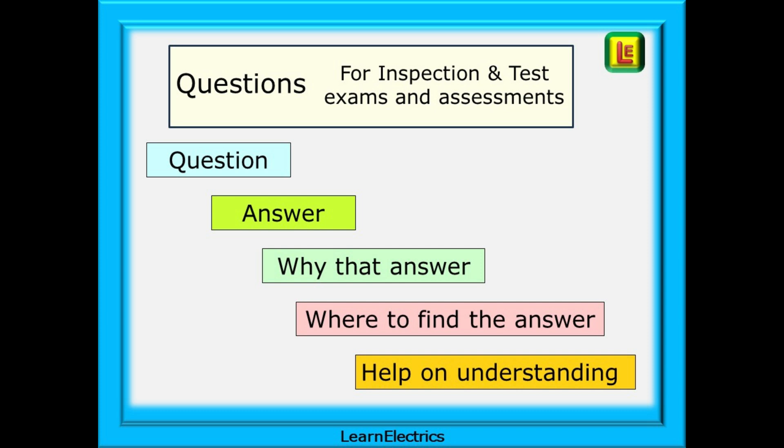And we show you where to find the answer in the books. And all books used will be to the 18th edition, Amendment 2 versions. Either a brown book, or with a brown stripe across the front. And we also explain the logic behind that particular answer. Why that is the correct answer for safety, function, and so on.